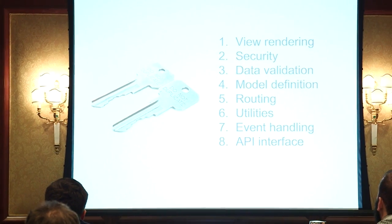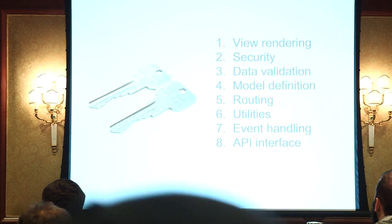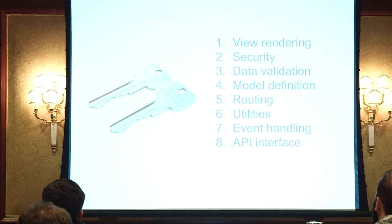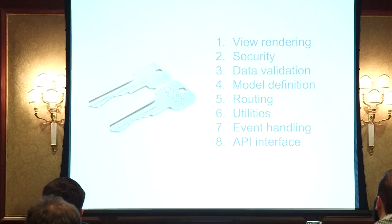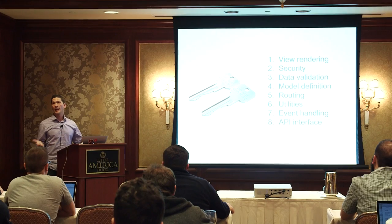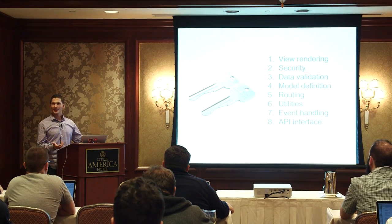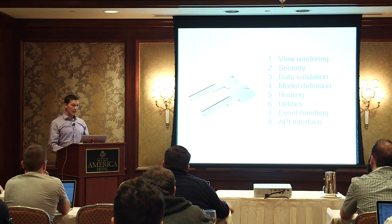And it isn't just view rendering — it's a lot of other stuff. Security, data validation, model definitions, routing, utilities. We all have duplicated code throughout our entire stack. I know pretty much everybody in this room has the same thing, especially if you're using different technologies on the back end and the front end. You're going to have the same regex validation in both places, and when you have to update it, you've got to update it in both places. We didn't want to do that.